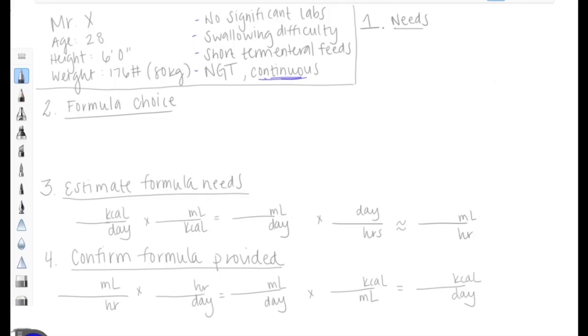The first step to determining how we're going to provide enteral feeds to this patient is going to be looking at their needs. The two important categories to consider for needs of just your average patient is going to be kcals or overall energy as well as protein. Both of these pieces can be determined in multiple ways.